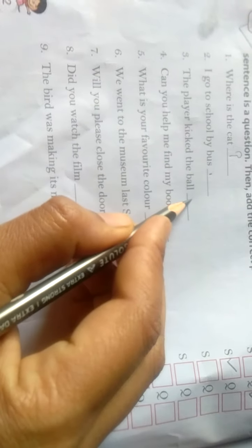The player kicked the ball. Player ne ball ko kick kiya. Also, this is also a statement. So we have to tick S. Can you help me find my book? Kya aap mujhe help karoge book dhundne mein? This is a question. We have to tick Q box.